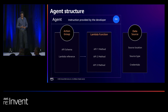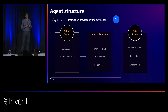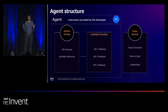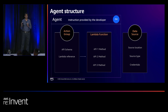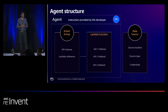Think of an agent as a container. You provide it with an instruction, and the agent contains action groups with an API schema and references to Lambda functions. The Lambda function has up to three APIs — for example, claims API, get pending docs, and send reminders. What sits outside of the agent container is the data sources — the knowledge bases — where you provide the source location, source type, and credentials.